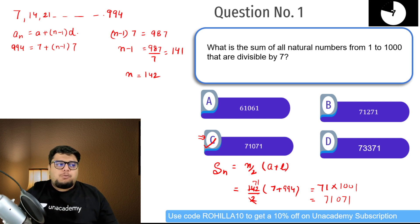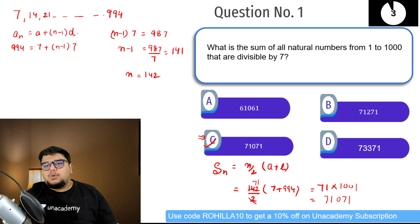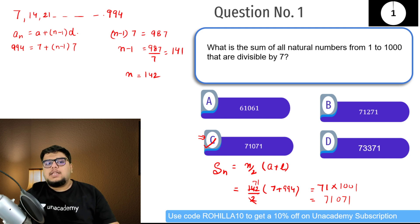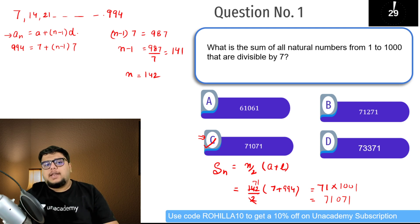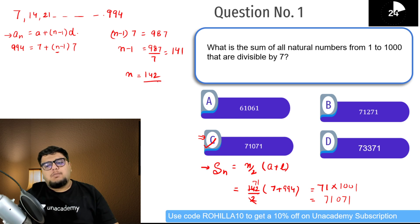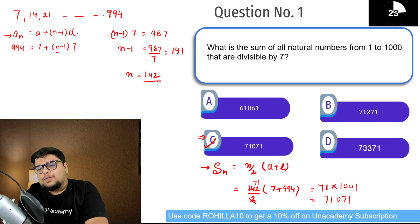I hope this is clear. पहला question very simple था। nth term का formula use किया, n का value निकाला कि कितने terms हैं, फिर sum of n terms का formula use किया।